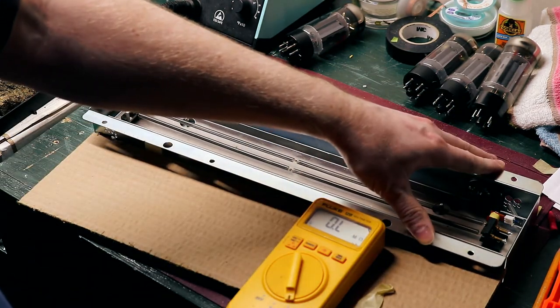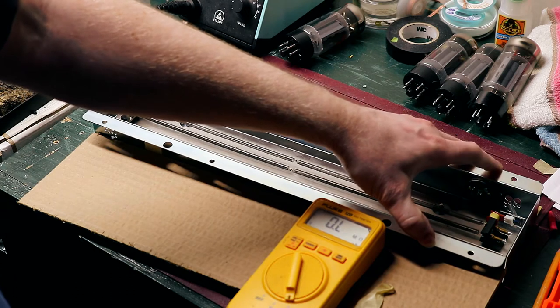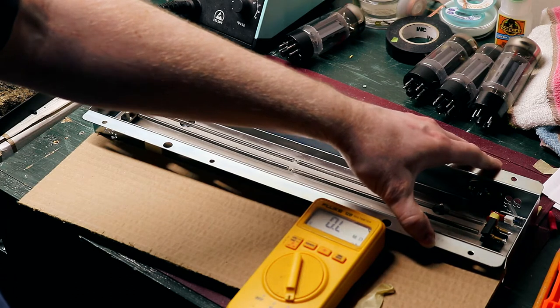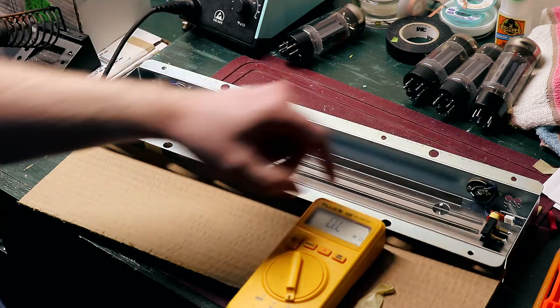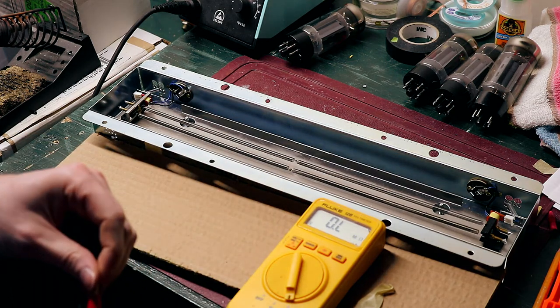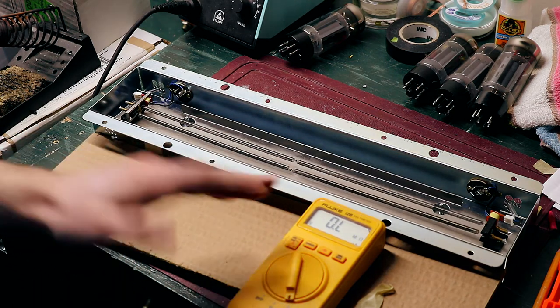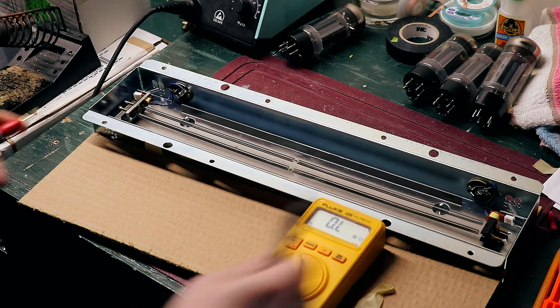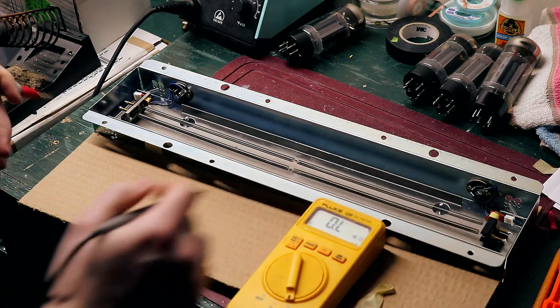With a lot of the older Fender amps, the tube-driven reverbs, they're set up for an 8-ohm input. So you might only see like 1 ohm or even just under 1 ohm on your meter. That's okay though.